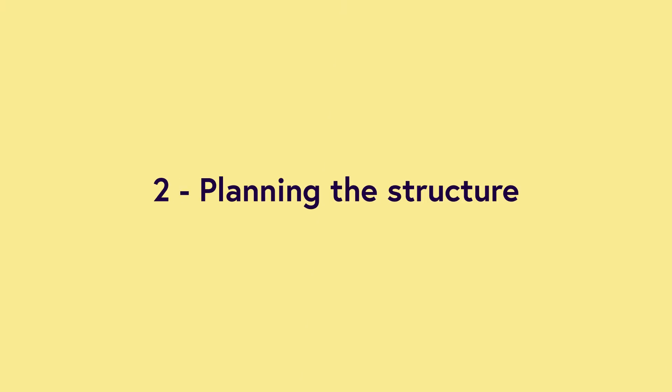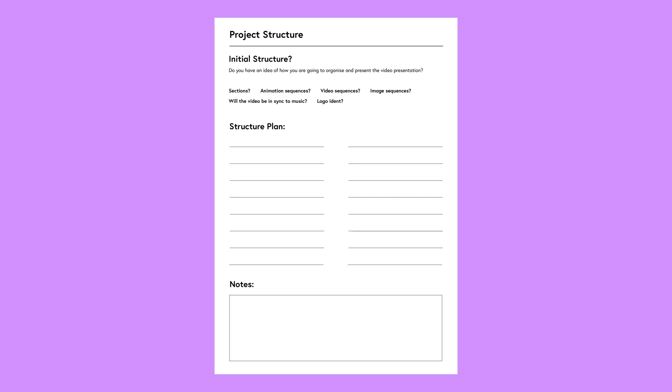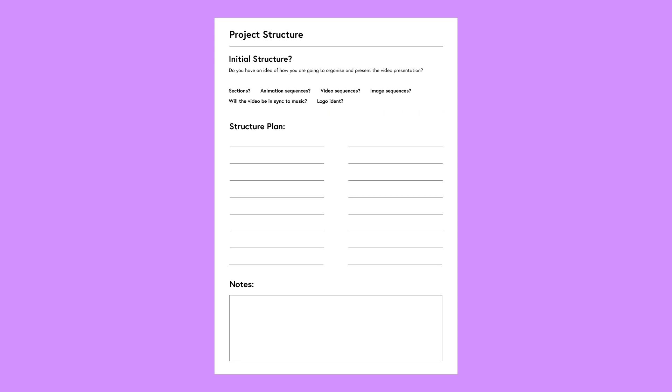Step two: planning the structure. I give some thought to the overall video presentation using another prepared sheet. I like to have a rough idea of how I'm going to structure the presentation. I'll ask myself questions like: will I create the presentation in sections? Will I include any animated video or image sequences? Will the video be in sync to music? And are there any logo idents I need to include? I plan my structure on this sheet and make any further notes.